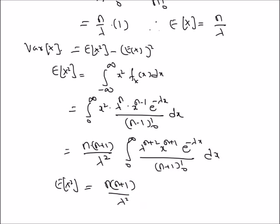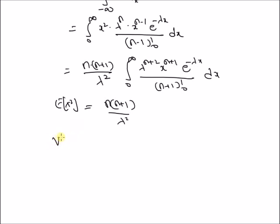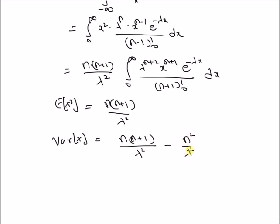Therefore the variance is the difference between the second moment and the square of the first moment: n(n+1)/λ² − (n/λ)² = n(n+1)/λ² − n²/λ² = n/λ². Therefore the variance of the Erlang random variable is equal to n/λ².